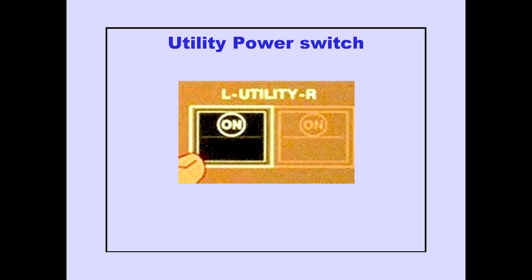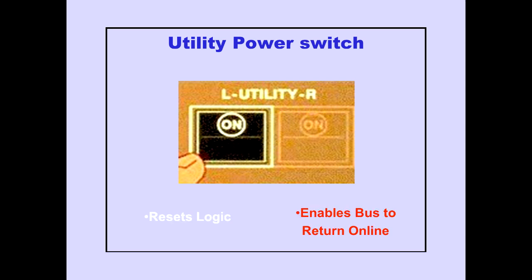Pushing the utility power switch off resets the ELCU logic. Pushing the switch on repowers the bus if the fault is cleared.